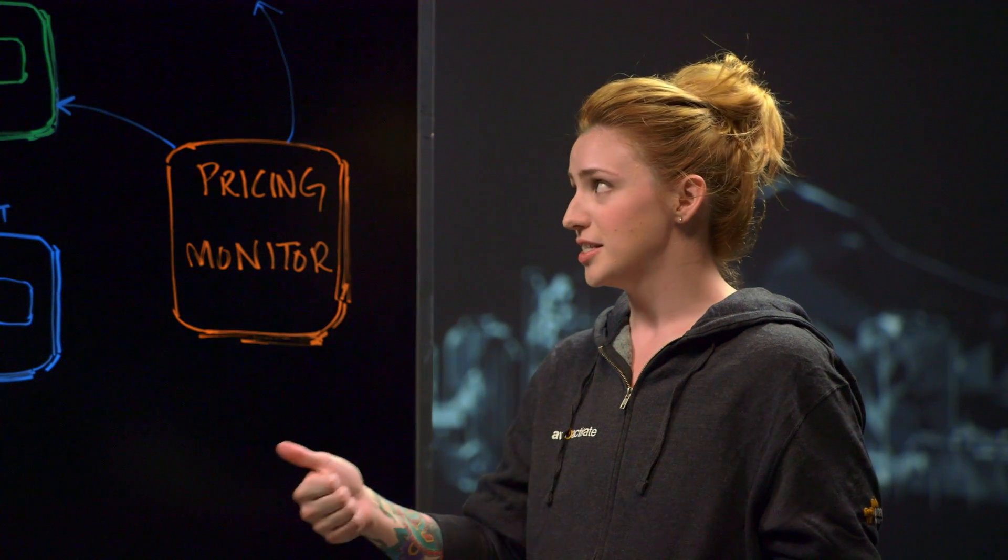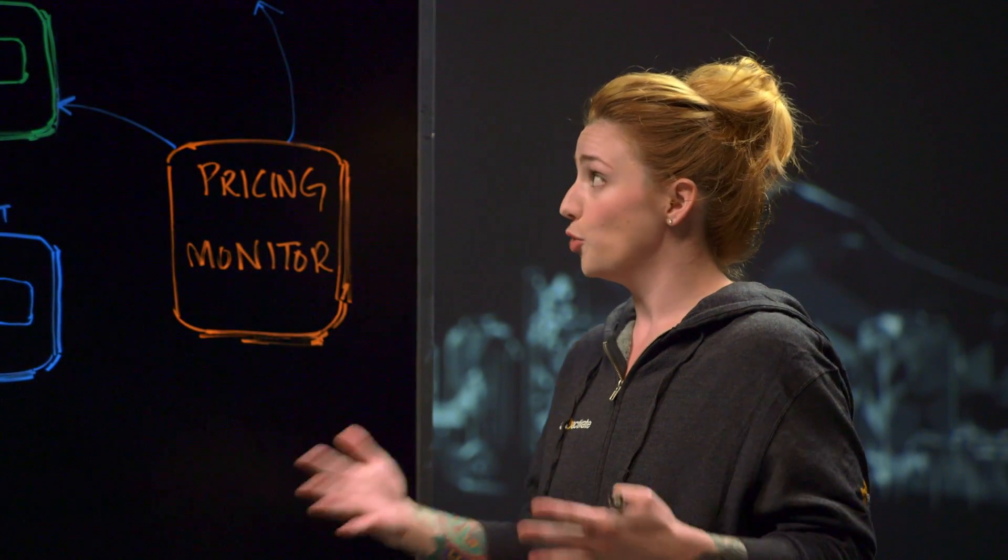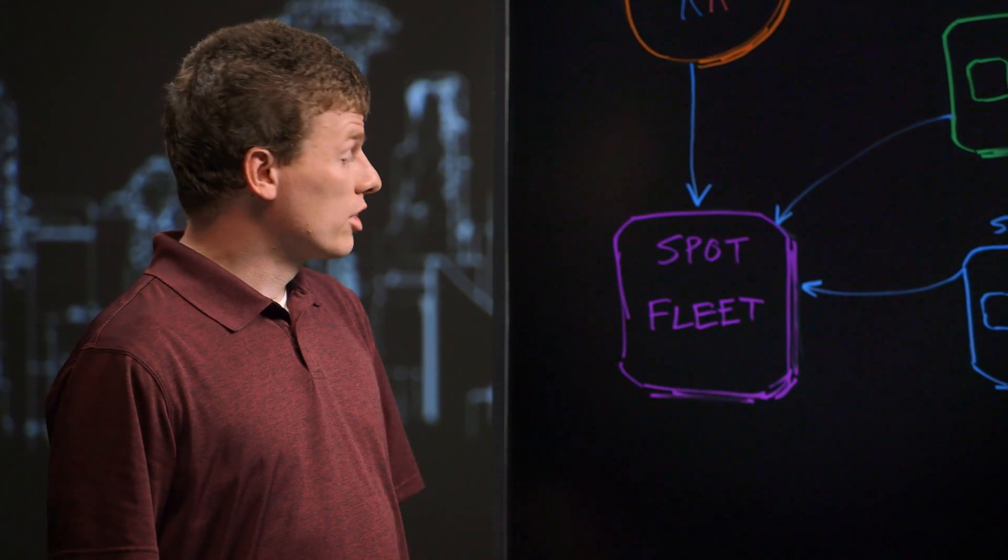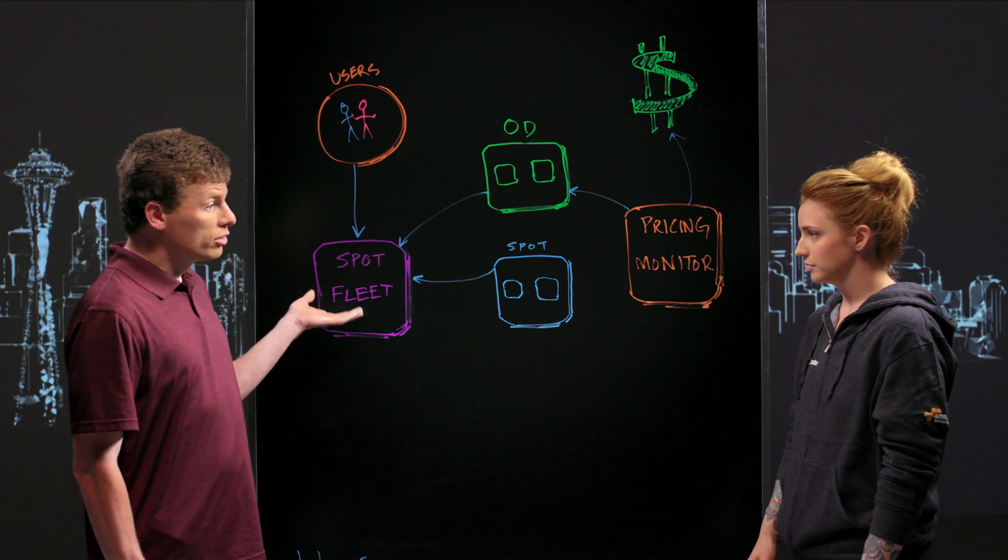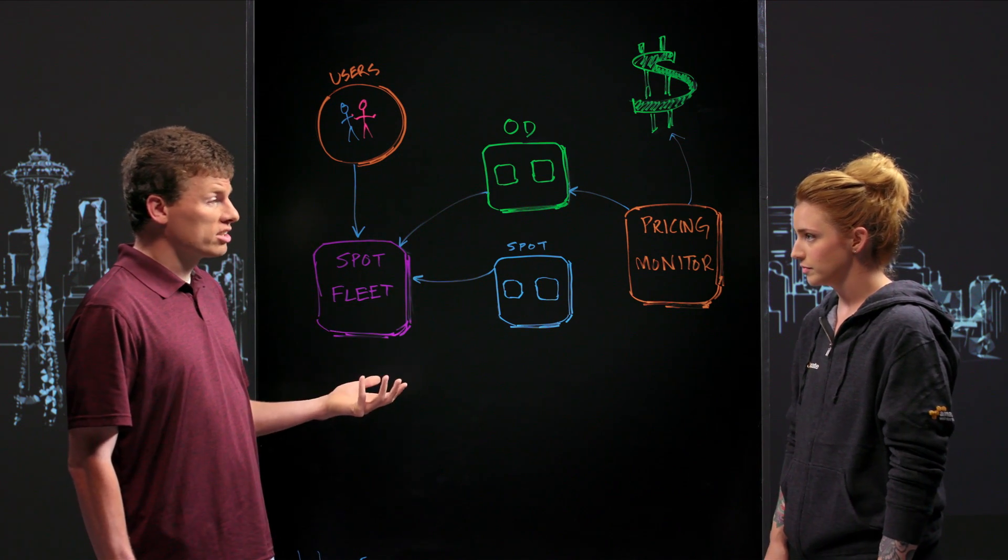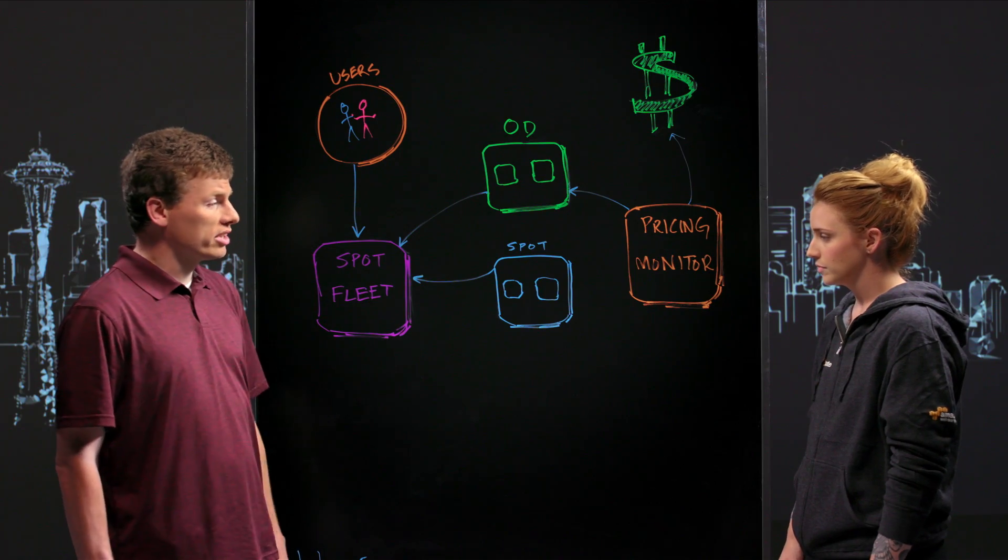So you're using the Spot instances, falling back to the on-demand, and then to keep up with your deployments, you're making your containers as small as possible so that you can deploy them as quickly as you possibly can. Right, and to make sure that time to service is really low so that when we do have to swap from the Spots to the on-demand instances, we can do it as quickly as possible so there's a seamless transition and no downtime or issues observed by the users.